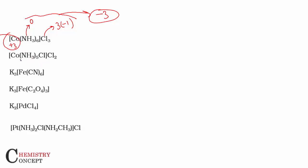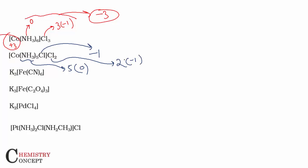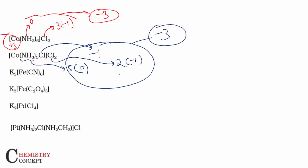In the same way, for the second example: we have five ammonia ligands — ammonia is zero. We have chlorine ligands, each minus one, and there are also chlorines outside the coordination sphere, each minus one. The total charge comes to minus three, so cobalt again has an opposite charge of plus three.